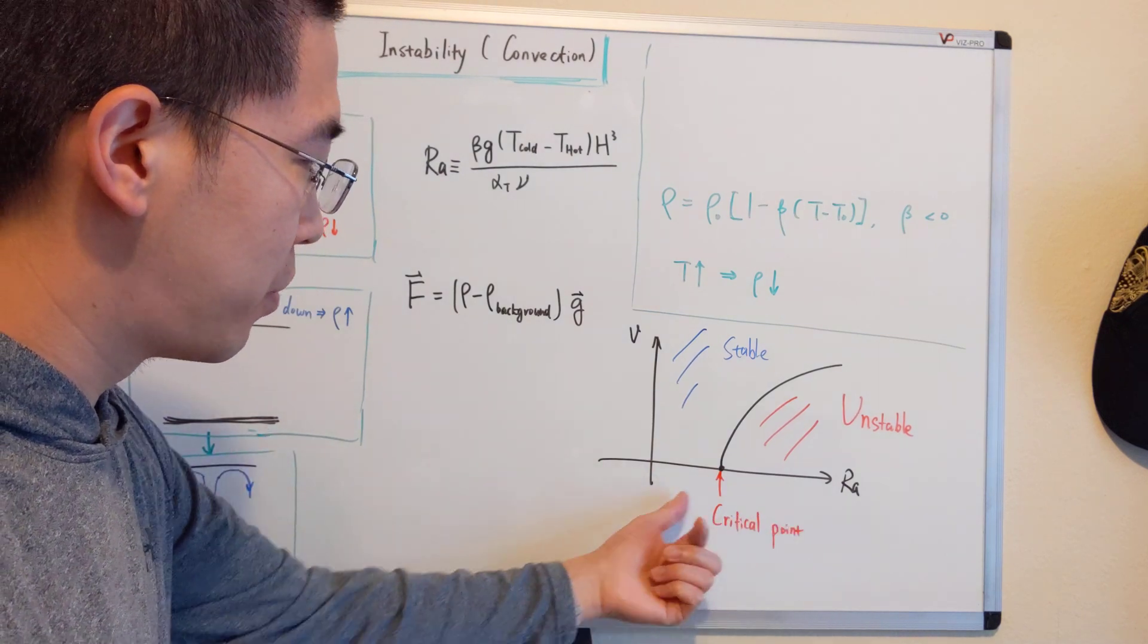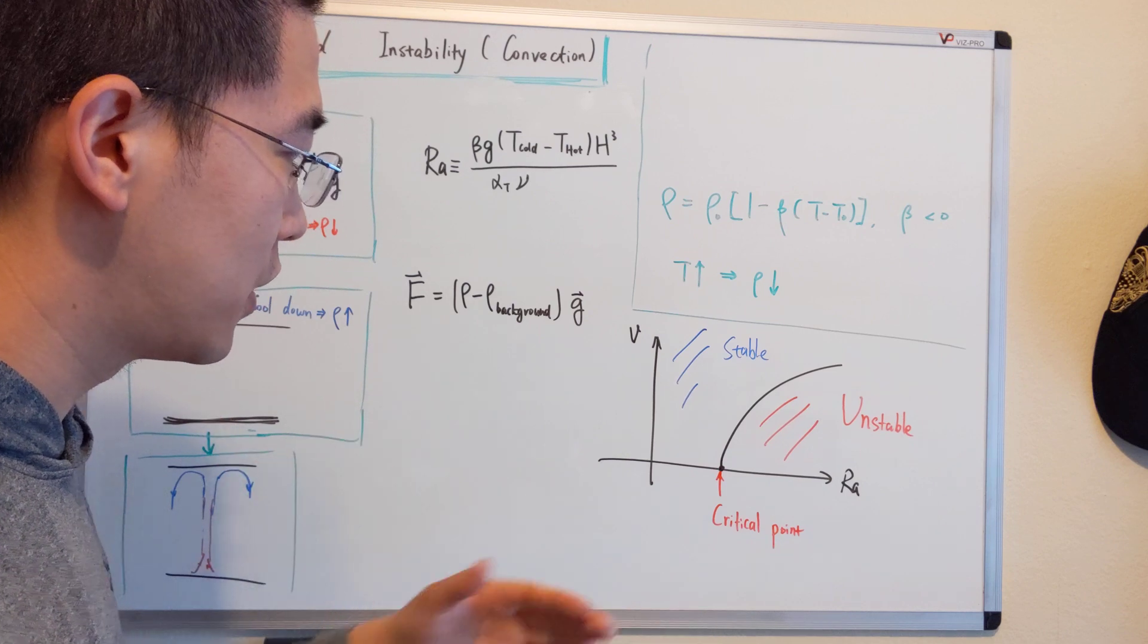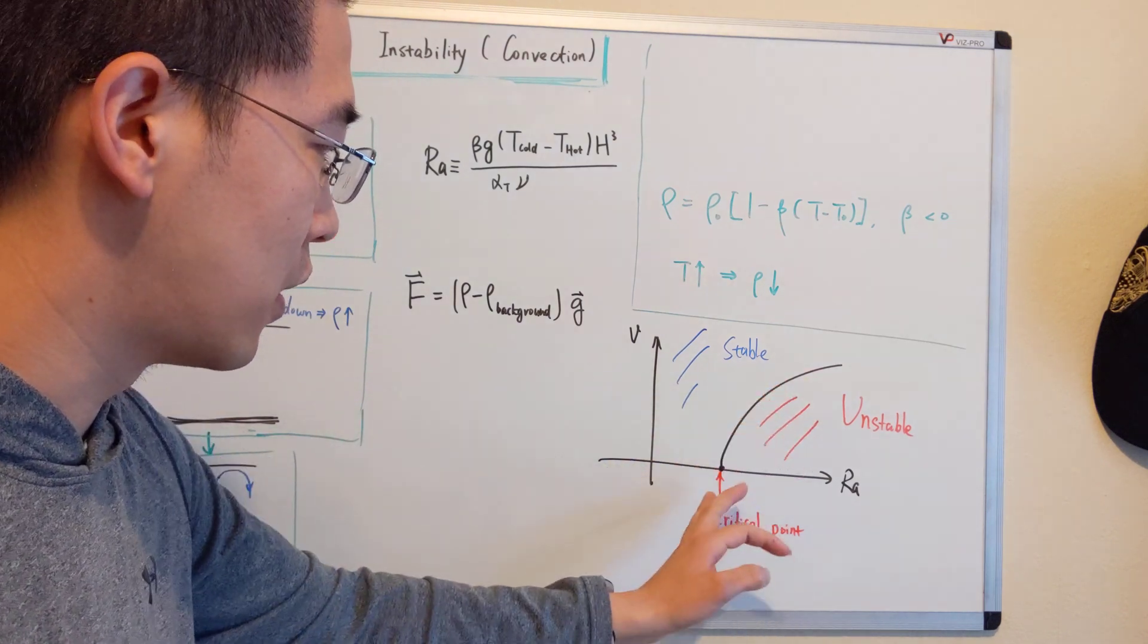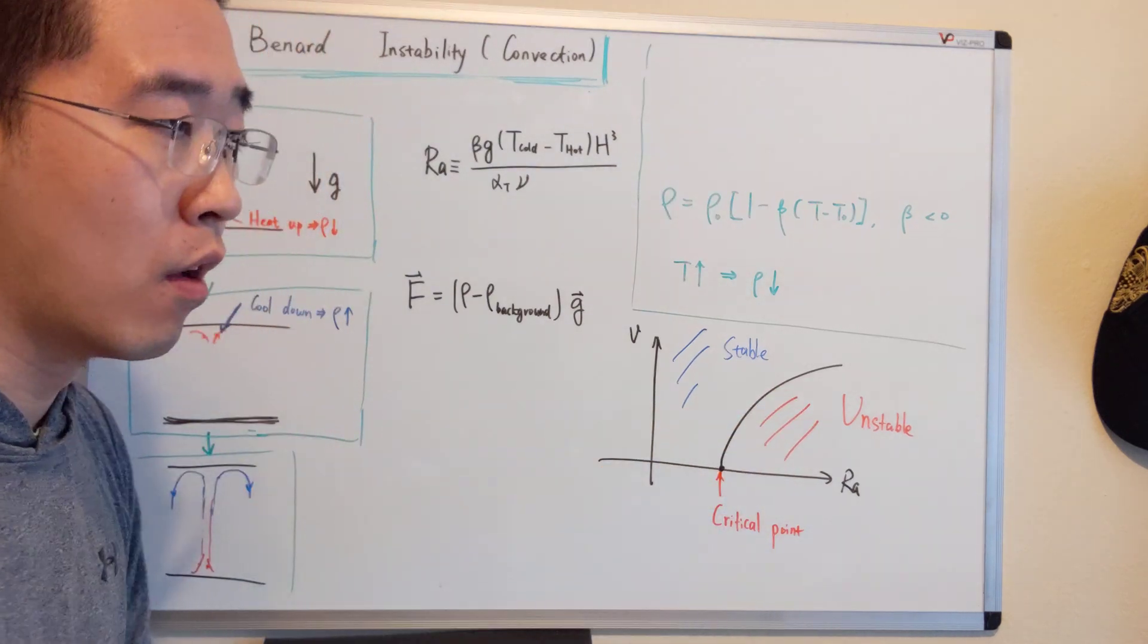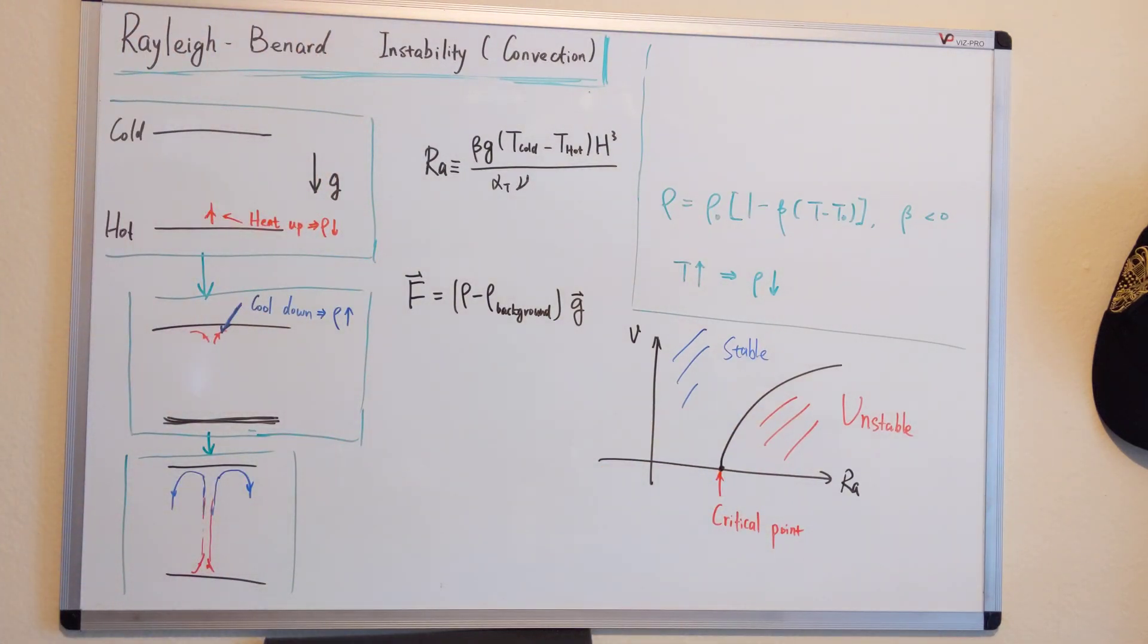This is an important point: before the critical point, there's no instabilities. After a certain point, the critical point, you will have instabilities in a certain region. So what does it mean?